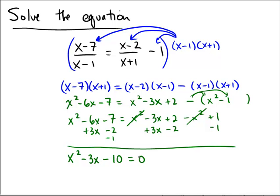Okay, now it's quadratic, so we can use some of our factoring techniques, and that would mean that we have x minus 5, x plus 2 is equal to 0, and then the zero product property is going to say that x equals 5 or negative 2.